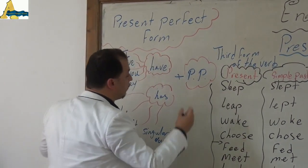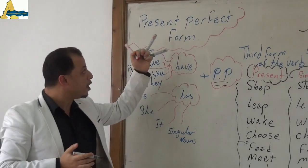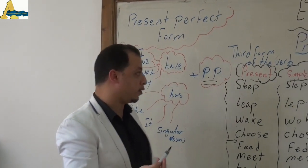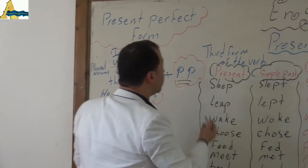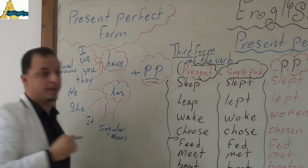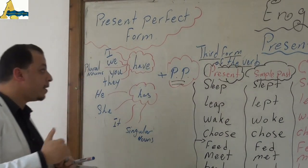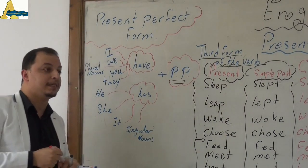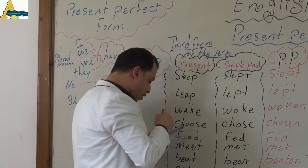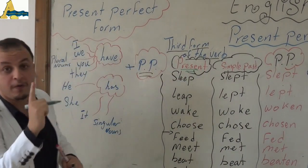What is this for? The present perfect. We know present perfect, but what about this one — the past participle. What is the past participle? The past participle is the third form of the verb. Let's try to remember. What are the verbs that we have known in the past? We know the present simple form — it's the first form of the verb.